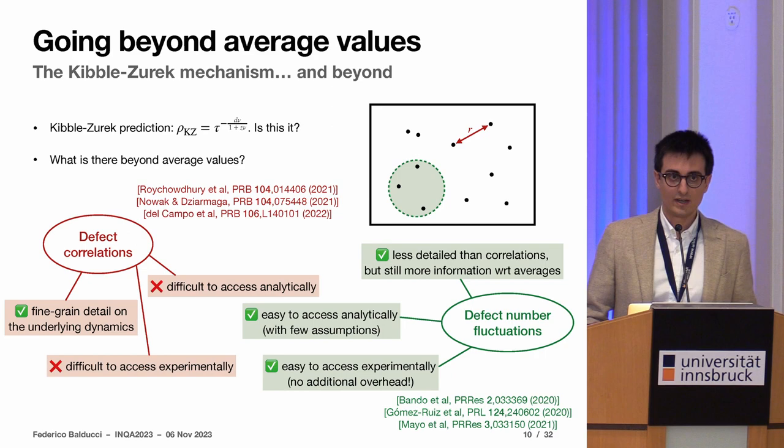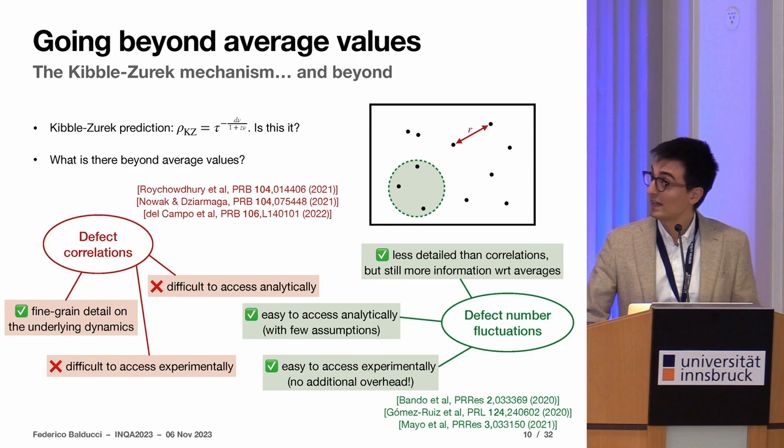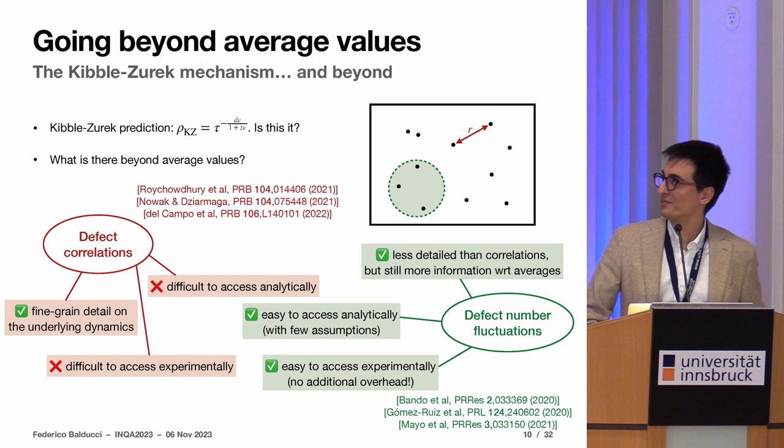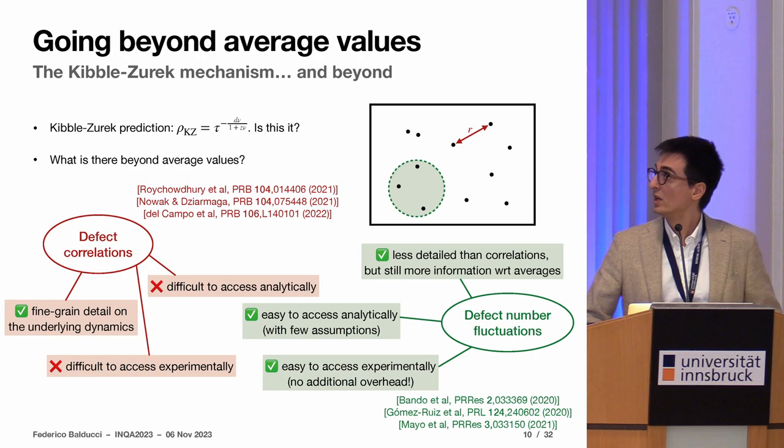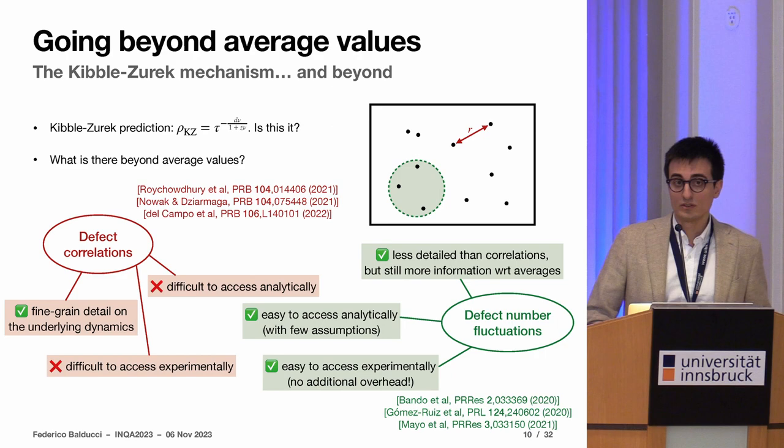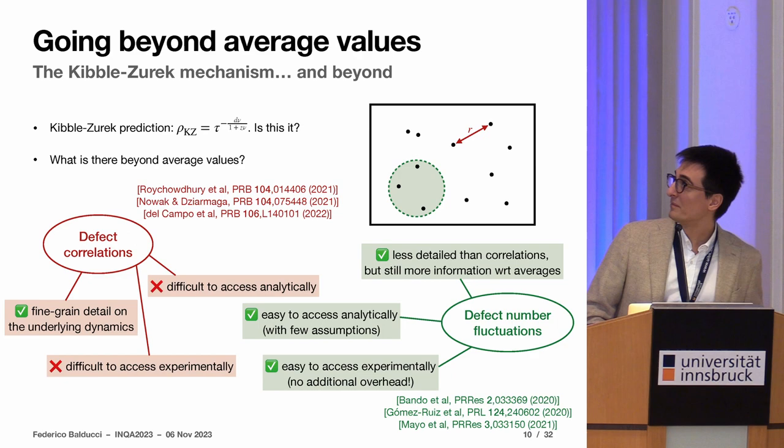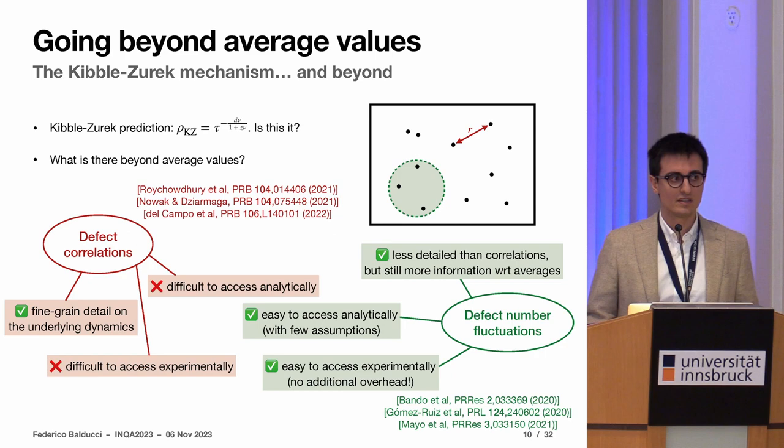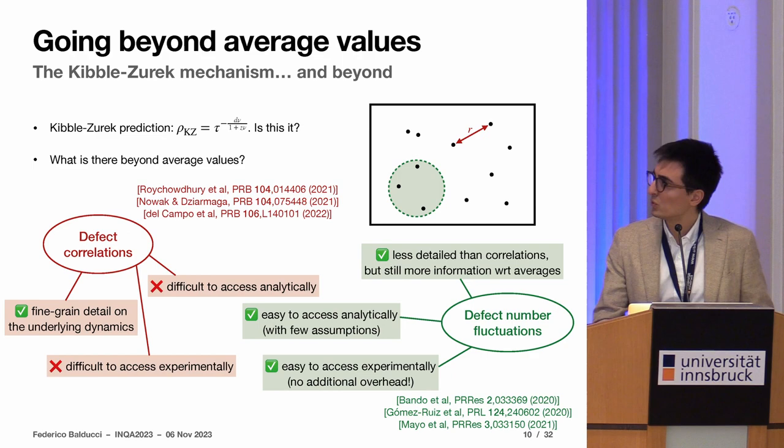The Kibble-Zurek mechanism as I presented it now was applied to the average number of defects formed in the final state. But can we say something beyond this average number? Can we characterize the final state at a finer scale? What one would like to do is to access all the correlations, but this is a bit difficult both from the theoretical and practical side. It is easier to start by accessing the fluctuations in the number of defects because these go beyond the average but are easier to access both from a practical and analytical level.